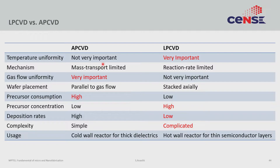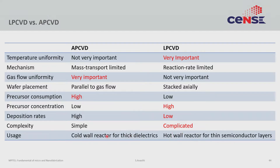Comparing AP-CVD and LP-CVD: gas flow uniformity is critical in AP-CVD, while temperature uniformity is critical in LP-CVD. AP-CVD is mass transport limited; LP-CVD is reaction rate limited. In AP-CVD, wafers are placed parallel to gas flow; in LP-CVD, they are stacked axially. Precursor consumption is higher in AP-CVD due to higher growth rates. LP-CVD uses higher precursor concentrations to compensate for lower growth rates. AP-CVD is simpler to construct; LP-CVD is more challenging. LP-CVD is used for semiconducting depositions; AP-CVD is used for dielectric depositions.